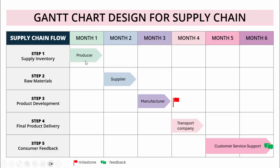You can see that supply inventory — meaning the producer has to supply — is in the very first month, and only then can we proceed with the other things, which are raw materials and product development, which comes under month three. I have added a milestone here, and then step four is the transport company, and then for two months we get the customer feedback.